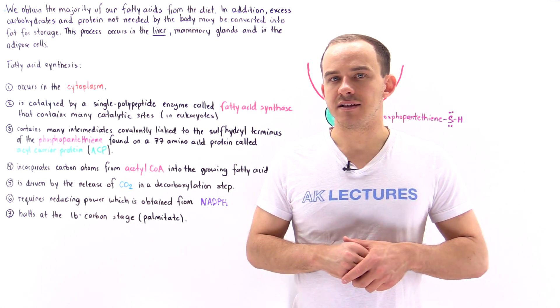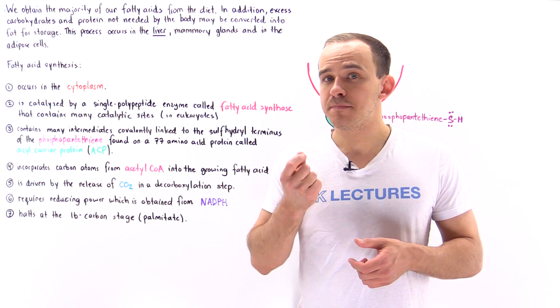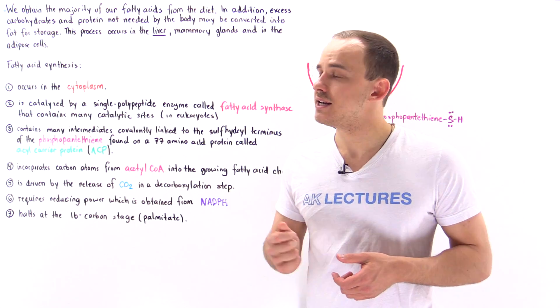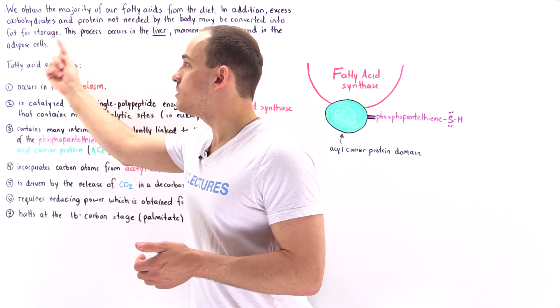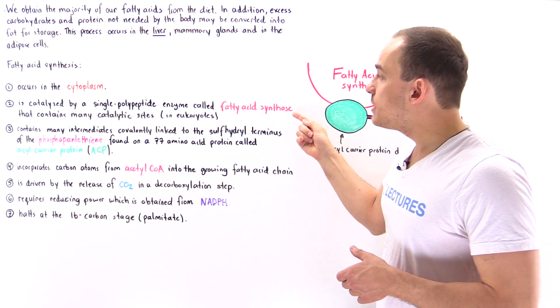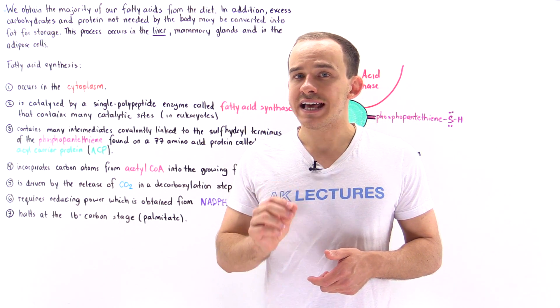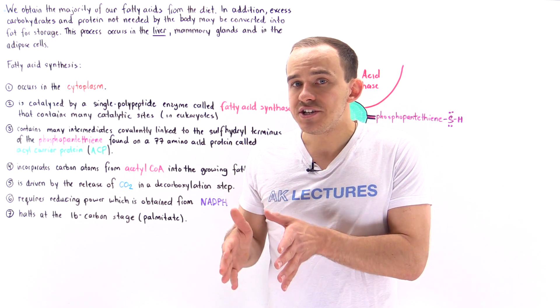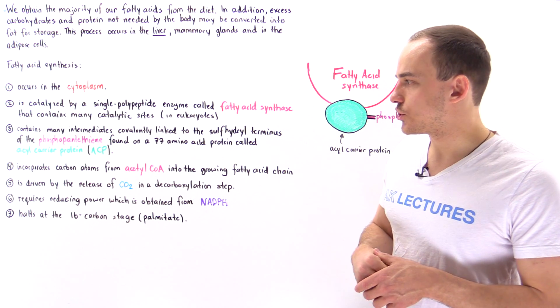Fact number two, in eukaryotic cells, the cells of our own body, we actually have a single polypeptide chain, a single protein known as fatty acid synthase that catalyzes the elongation, the formation of fatty acid molecules. And this fatty acid synthase actually contains seven different catalytic sites, which each carries out its own specific function, as we'll see in the next lecture.